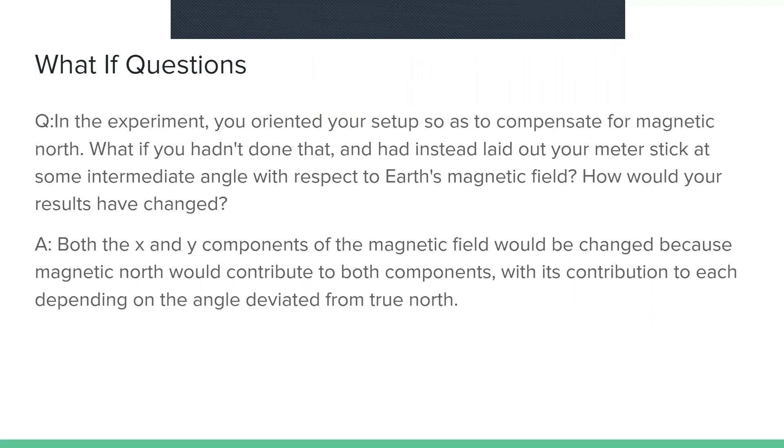What if? In the experiment, you orientated your setup so as to compensate for magnetic north. What if you hadn't done that, and instead laid out your meter stick at some intermediate angle with respect to the earth's magnetic field? How would your results have changed?